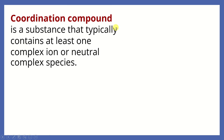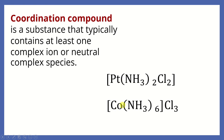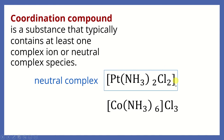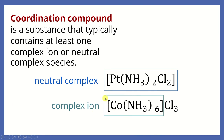Let's start with coordination compound. What is it? It is a substance that typically contains at least one complex ion or neutral complex species. I put two examples of coordination compounds on this slide. The first one has a neutral complex — the group within the square bracket identifies the complex. The second example is a coordination compound that has a complex ion. These two are coordination compounds because each has at least one complex, either neutral or as an ion.